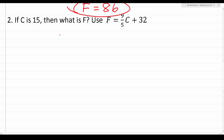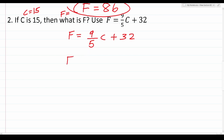I'll start by copying down the formula: F equals 9 over 5 C plus 32. We're told C is 15 and we're trying to solve for F. As it happens, the formula already has F set equal to something, so we won't have to do much rearranging — this one is going to be a lot simpler. So: F equals 9 over 5 times 15, plus 32.